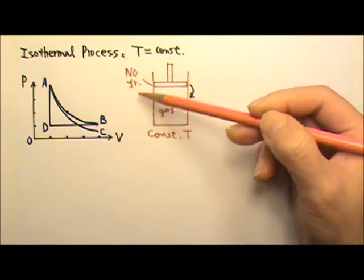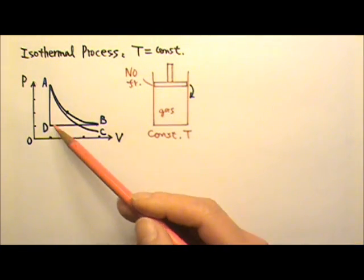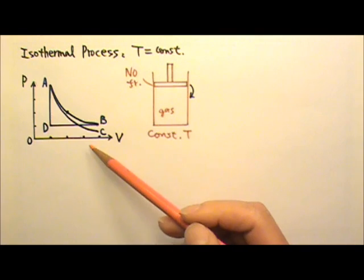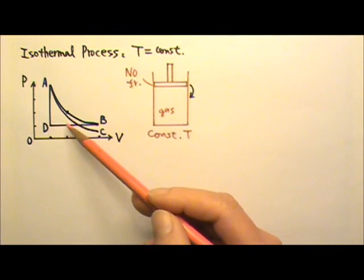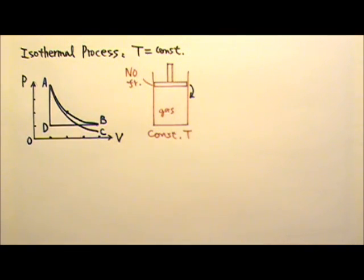If we plot this process on a PV diagram, which of those lines could be a match?